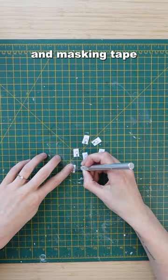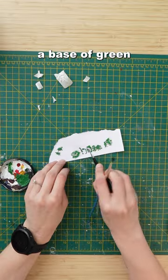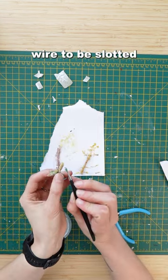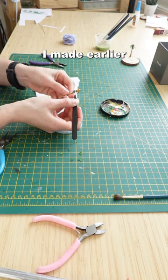For the leaves I used wire, paper and masking tape and I painted over them a base of green and bent each wire to be slotted into the holes I made earlier with super glue.